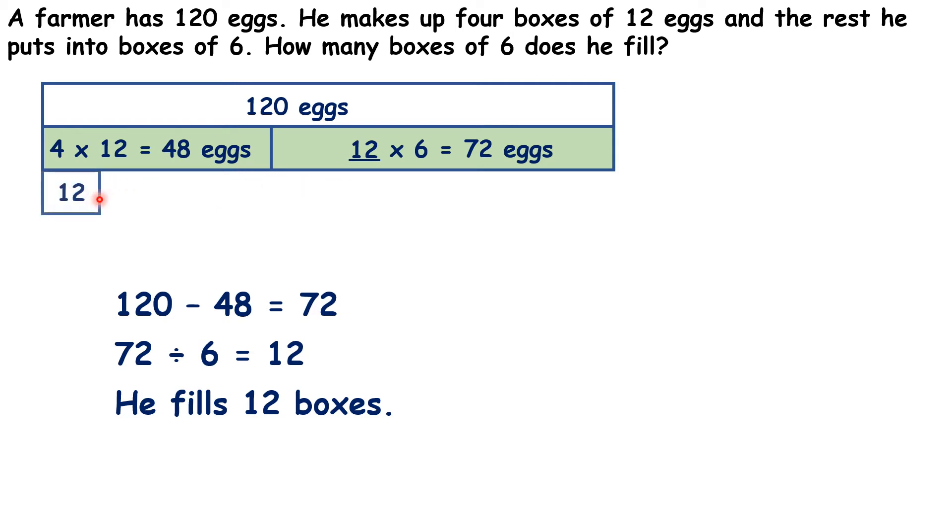So he had 1, 2, 3, 4 boxes of 12. Then the rest he put into boxes of 6, and he could make 1, 2, 3, 4, 5, 6, 7, 8, 9, 10, 11, 12 boxes.